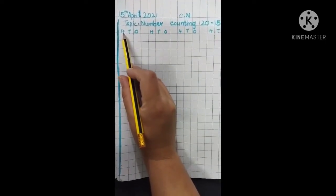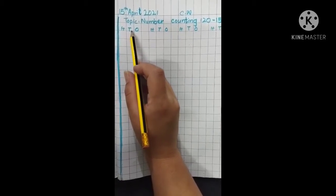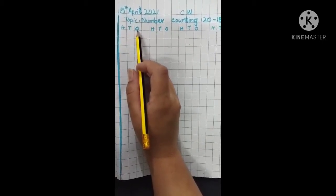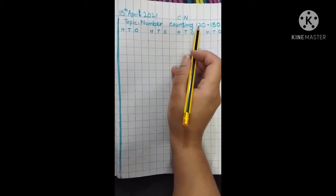Now, this is H. H stands for 100, T stands for 10, and O for ones, as I told you in your previous class.